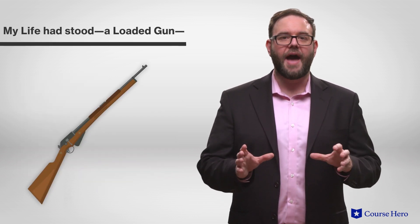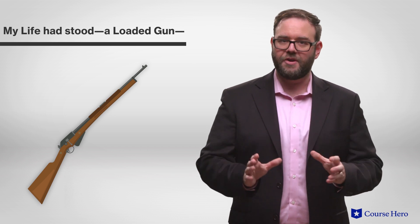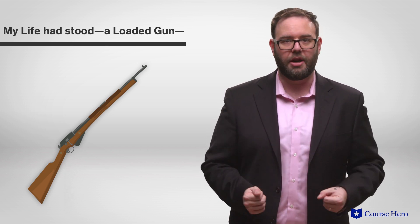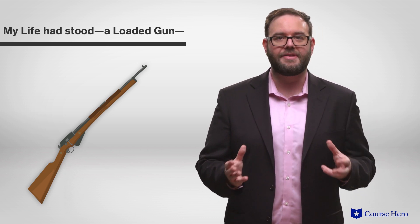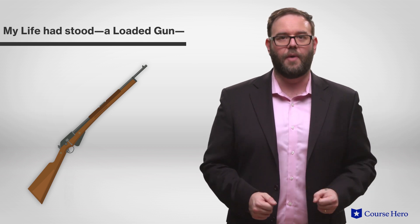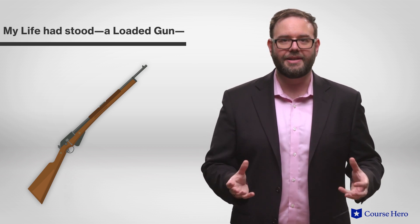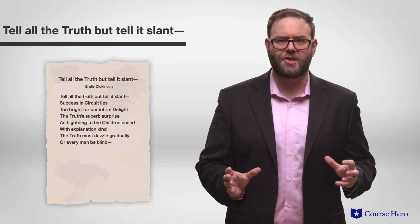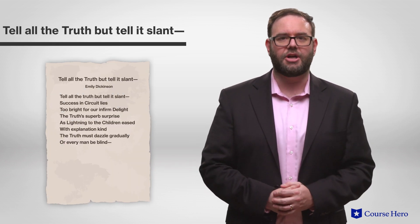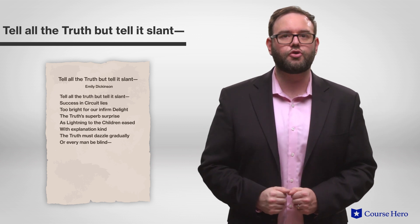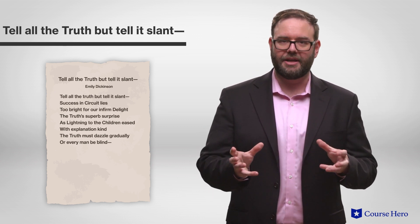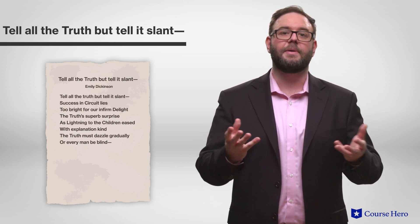In My Life Had Stood a Loaded Gun, the speaker compares herself to a loaded gun, sitting passively until the owner identifies it as his own and carries it away. Paradoxically, the gun can kill, but it cannot die. Tell All the Truth But Tell It Slant is a didactic poem teaching a simple lesson. One must tell the truth, but must tell it indirectly, because being a little circuitous will be more successful.